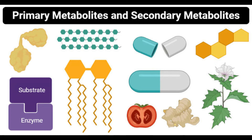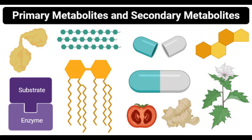Primary metabolites are found in most cells throughout the body and are also termed central metabolites. They are crucial for various metabolic activities, as some act as a substrate for these processes while others act as catalysts. Some primary metabolites like amino acids are common throughout organisms, whereas some are restricted to certain cells or organisms.